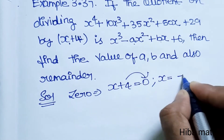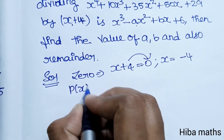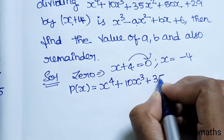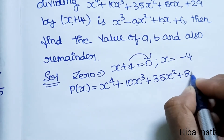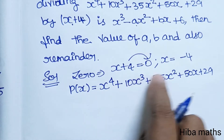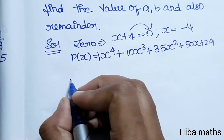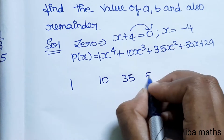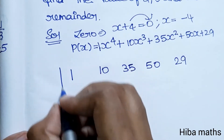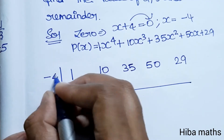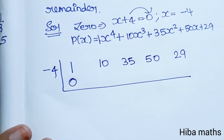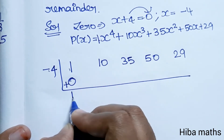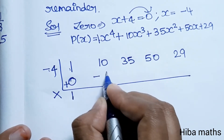P(x) = x⁴ + 10x³ + 35x² + 50x + 29. We substitute x = -4 into P(x), so P(-4) gives us the remainder value.